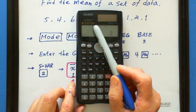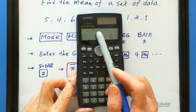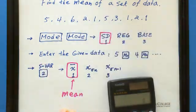So now you can see on the top of screen, you have SD, small letter SD over there. Now the second step, enter the given data.